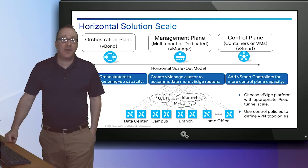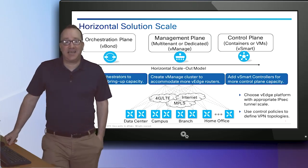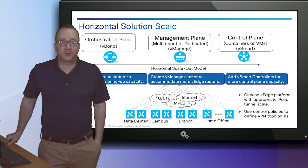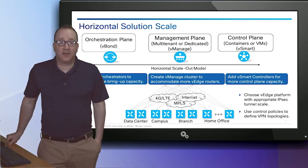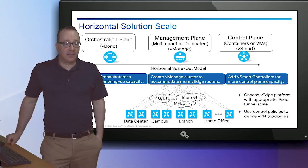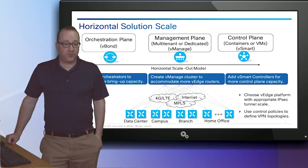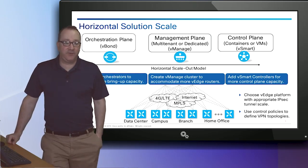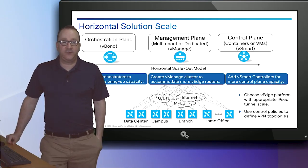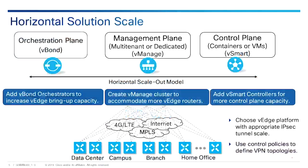The SD-WAN solution is highly scalable beginning at the controller level. You can cluster vManage to the levels required and add vBond orchestrators and vSmart controllers. You should connect each vEdge to a minimum of two vSmart controllers. When vSmart controllers reach their limits, simply add more and balance the vEdge routers between them.